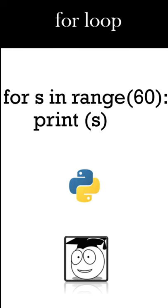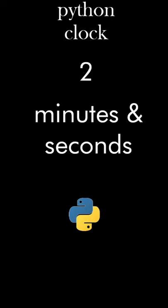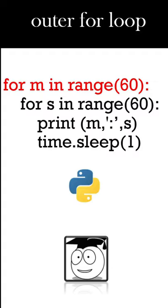We start off with the seconds. We use a for loop that's going to go from 0 to 59 and a sleep for one second between the changes of seconds. Then we can add another for loop for minutes, again in the range 60.